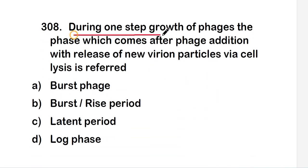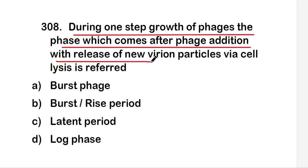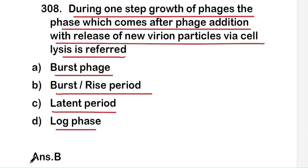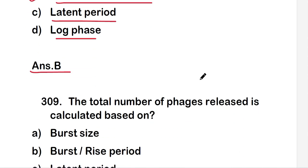The next question is: during one-step growth of phages, the phase which comes after phage addition with release of new virion particles via cell lysis is referred to as — burst size, burst or rise period, latent period, or lag phase? The right answer is option B, that is burst or rise period.